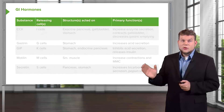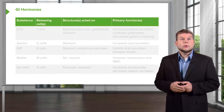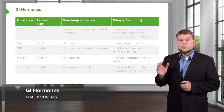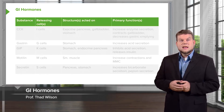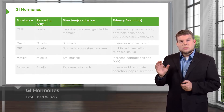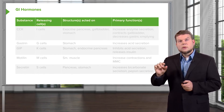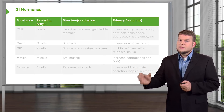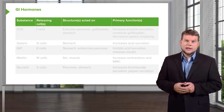Now, besides neural signaling molecules, we also have hormones. There are five primary hormones and these we need to have identified, because as we go through the various GI lectures, these will come up over and over again.